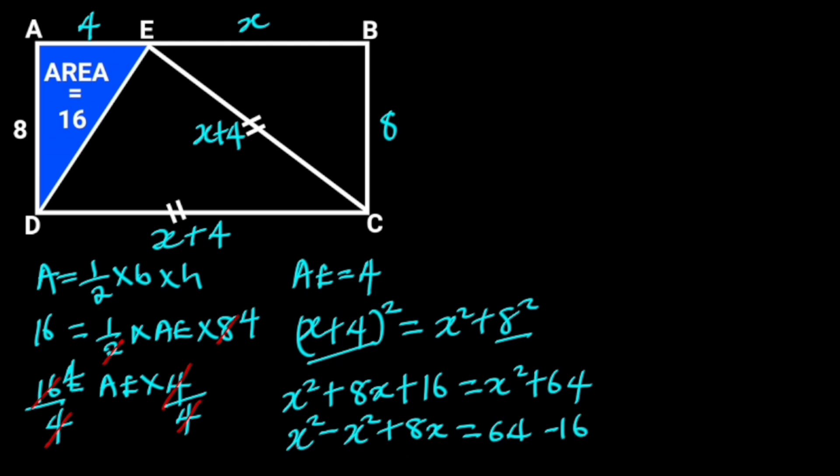On the left side, x squared will minus x squared, and on the right side, 64 will minus 16 to give us 48. So we are left with 8x is equal to 48. Dividing both sides by 8 will leave us with x equals 6.